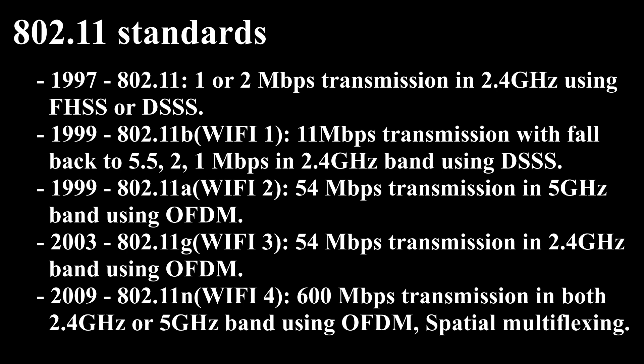802.11g, also referred to as Wi-Fi 3, year 2003, applies to wireless LANs and is used for transmission over short distances at up to 54 Mbps in the 2.4 GHz band. 802.11n, also referred to as Wi-Fi 4, year 2009.